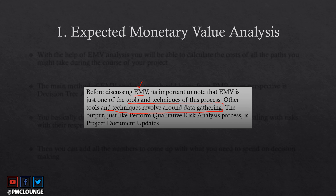Those three techniques are specifically about analyzing the data; there are other tools and techniques around data gathering, which we have discussed previously in other processes at pmclounge.com. Since the new concepts introduced in this process revolve around analyzing the data, we are going to focus on those three in this video. Also, just like the Perform Qualitative Risk Analysis process, the output of the Perform Quantitative Risk Analysis process is also a project document update — so nothing much important from an output standpoint.